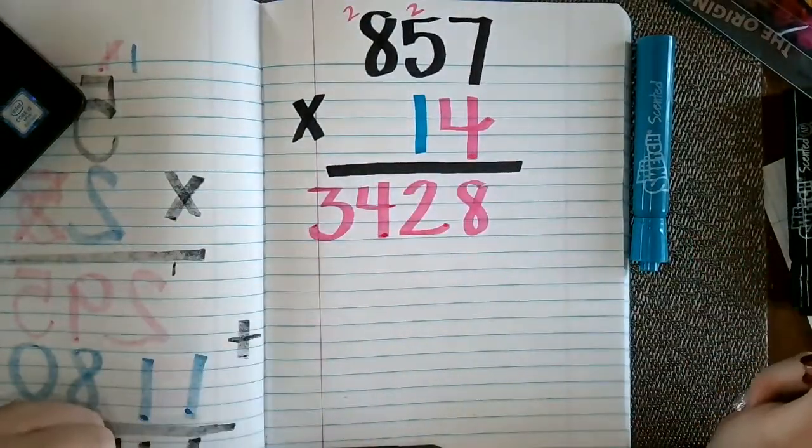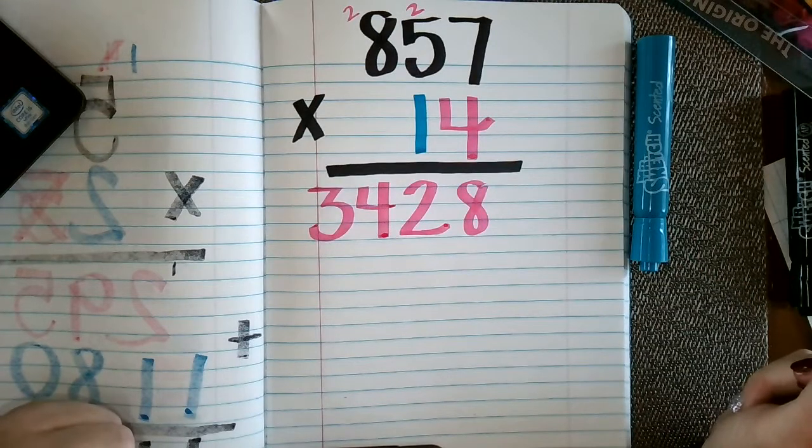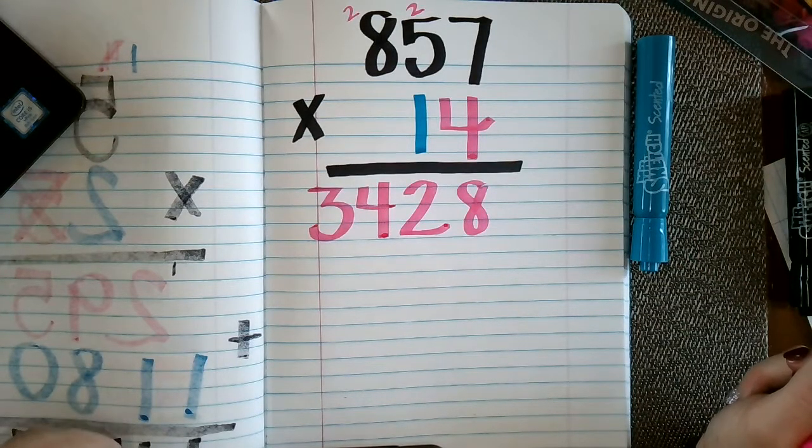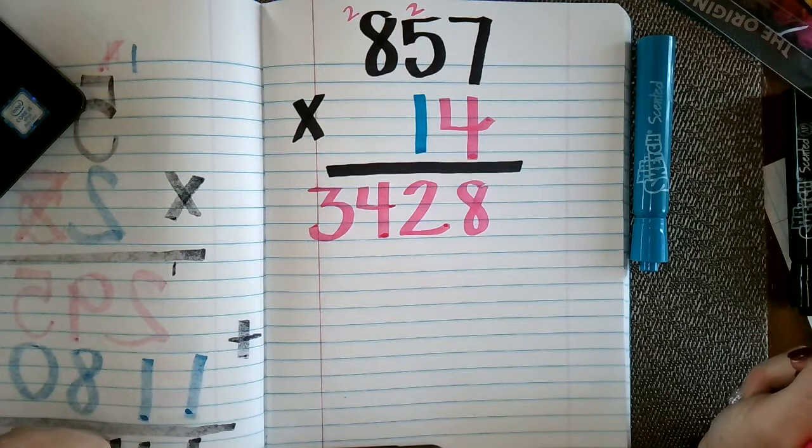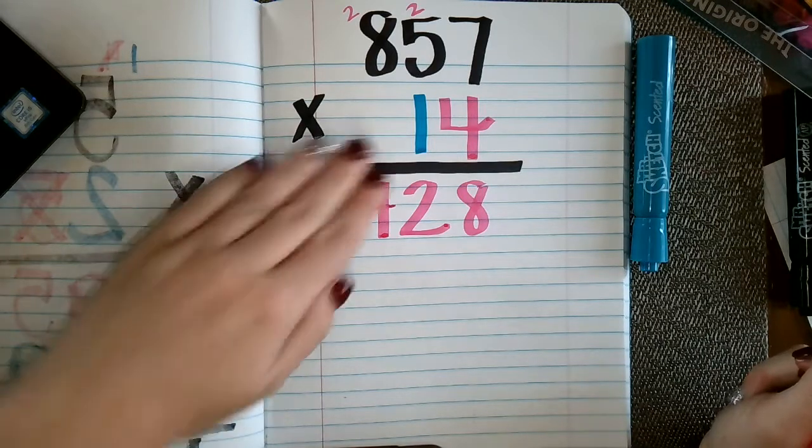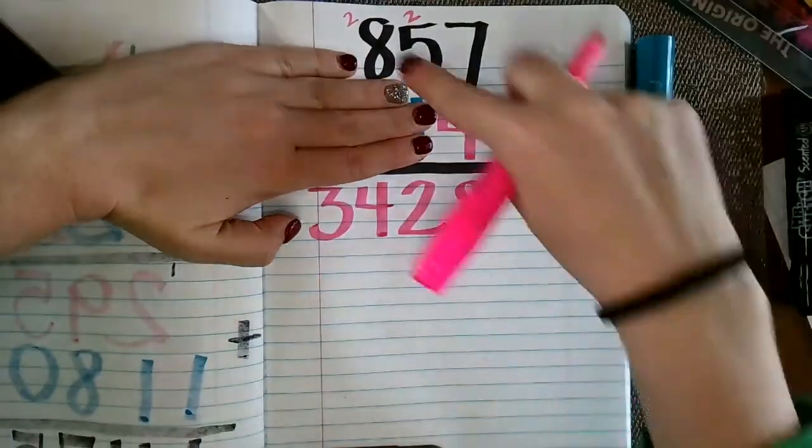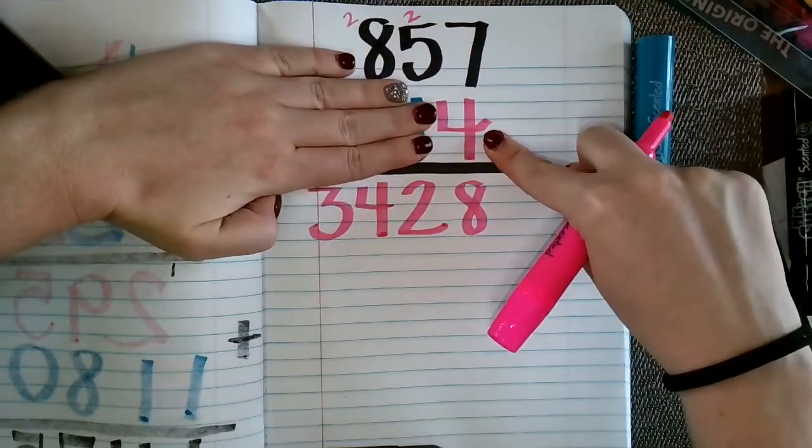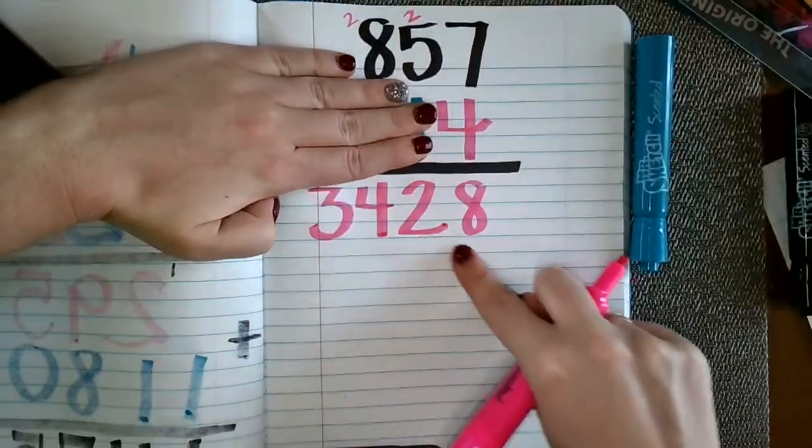Remember you can pause at any time during this video if you want to work ahead and then unpause to check with me. That is completely fine. So now we have just figured out that 857 times 4 is 3428.